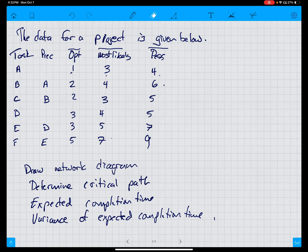We're going to draw a network diagram, we're going to determine the critical path, expected completion time, variance of expected completion time, which will then allow us to figure out the probability of getting done by certain times, which will allow us to evaluate risk.